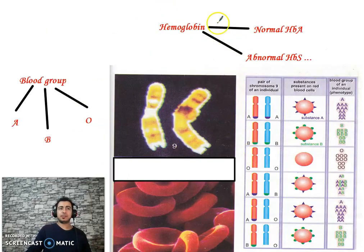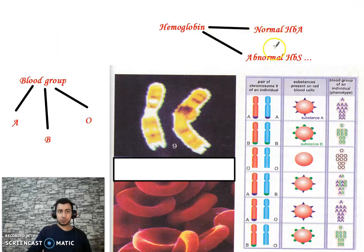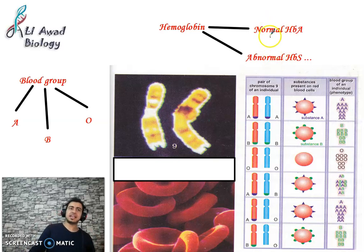For example, hemoglobin has more than one form. Two main forms: normal HbA and abnormal HbS, and there are also thalassemic forms, among others.